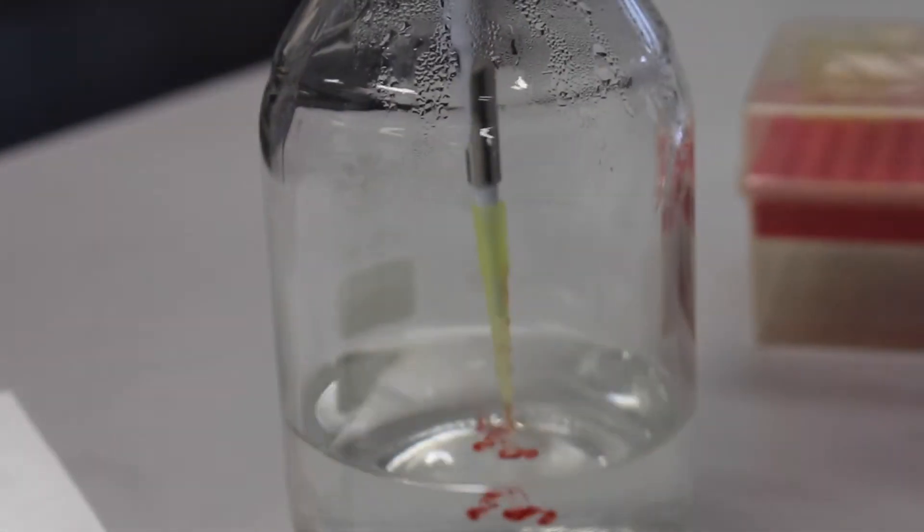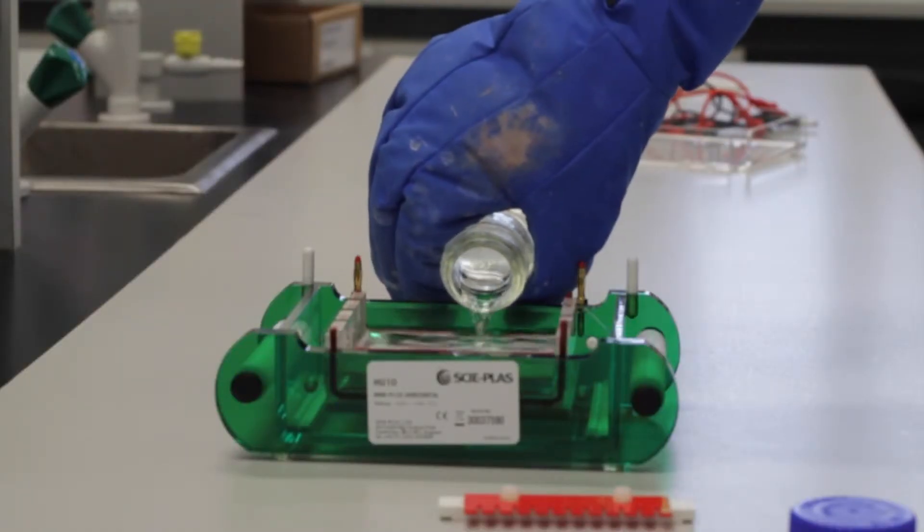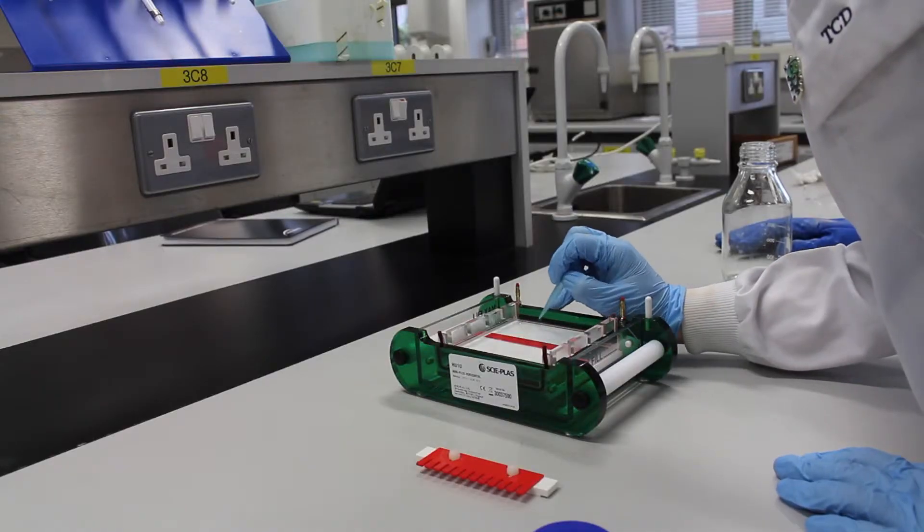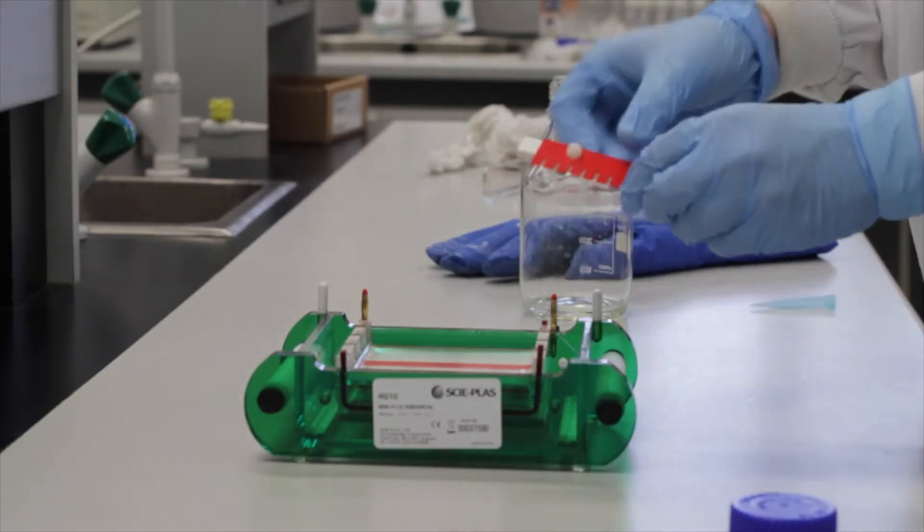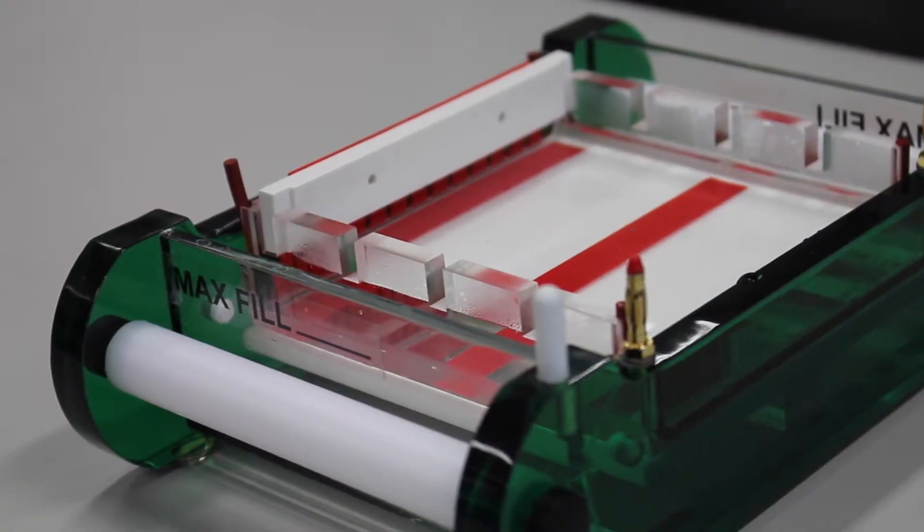15 microliters of gel red is added to the solution. The gel solution is now poured into the gel tray. Any air bubbles are removed with a pipette tip and the comb is added. The gel is now left to solidify at room temperature.